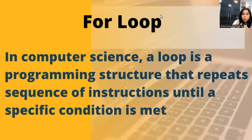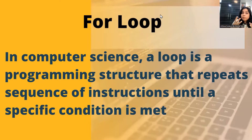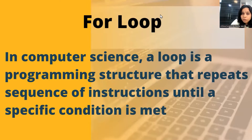What is this for loop and how is it different from the repeat loop? We will learn everything in this session. In computer science, a loop is a programming structure that repeats itself until a specific condition is met — it repeats a sequence of instructions until a specific condition is met. This is what we have seen in the repeat loop also.